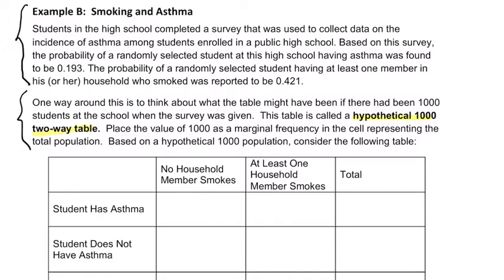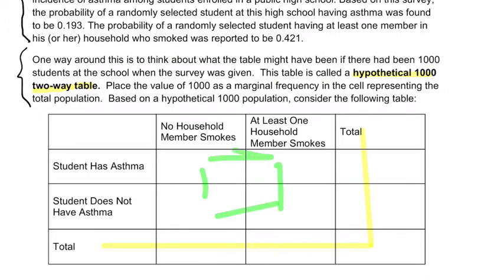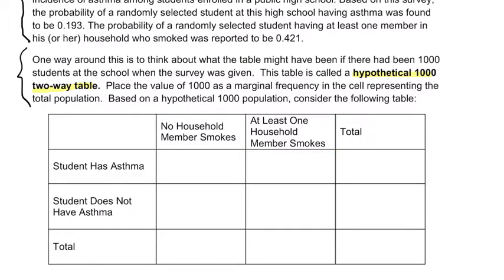They're saying place the value of 1,000 as a marginal frequency in the cell representing the total population. Marginal frequencies are here on the margins of your table, and they represent different kinds of totals. Joint frequencies are here. So the absolute total of everything on a hypothetical 1,000 table is just 1,000 — that's the number that goes here.